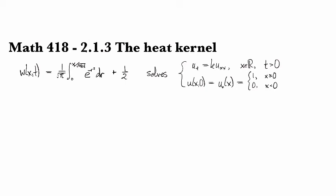In the last video, we showed that this function here, one over root pi times the integral from zero to x over square root 4kt, times the integral e to the minus r squared plus a half, is the solution for the Cauchy problem for the heat equation on the real line for positive time.